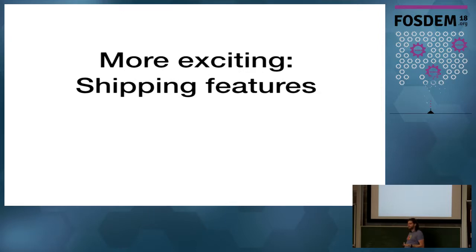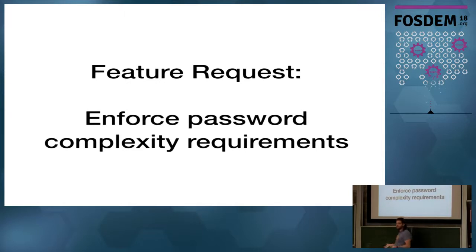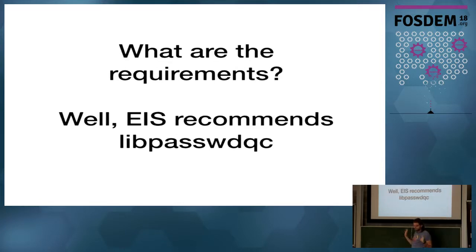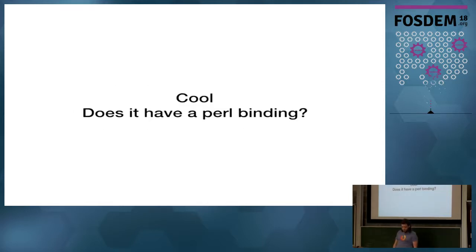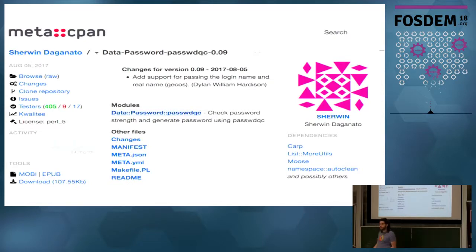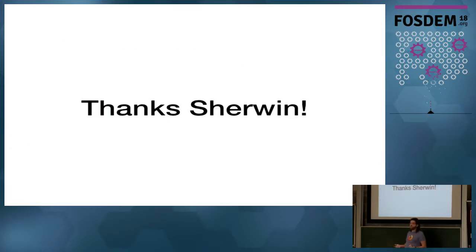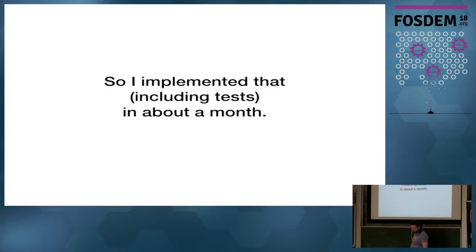But more exciting than updating stuff is shipping features. So I had a feature request, which was make all the users of Bugzilla hate me by making their passwords harder. So I asked EIS, which is Enterprise Information Security, what do you recommend? And they recommended a C library. And I'm like, oh, cool. Is there a Perl binding for that? And as it turns out, there is. There's a Perl binding for that. It needed an additional feature, which I patched. And I want to thank Sherwin, the author of that module, because I was able to ship a feature that was important to a lot of people in about a month.